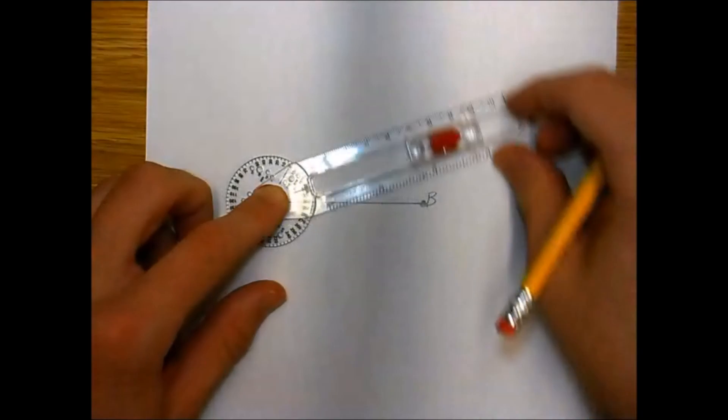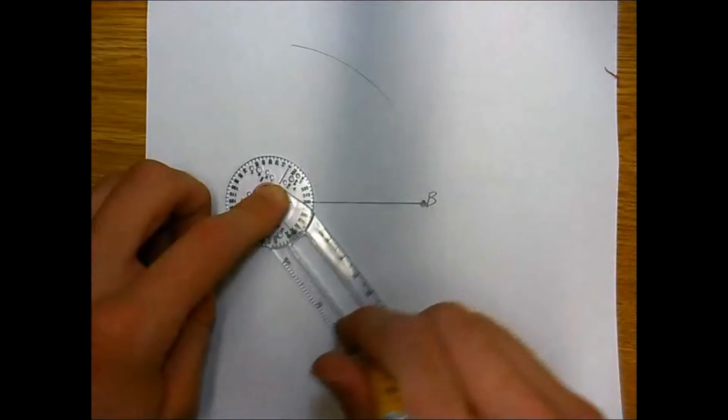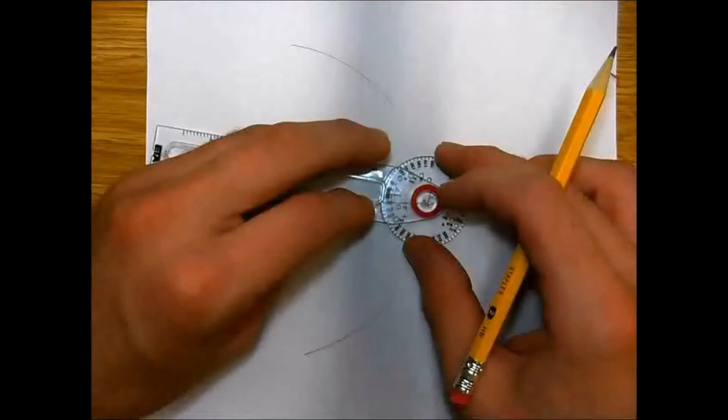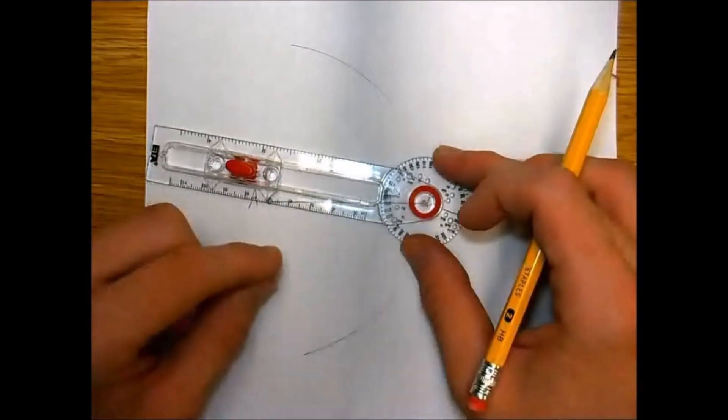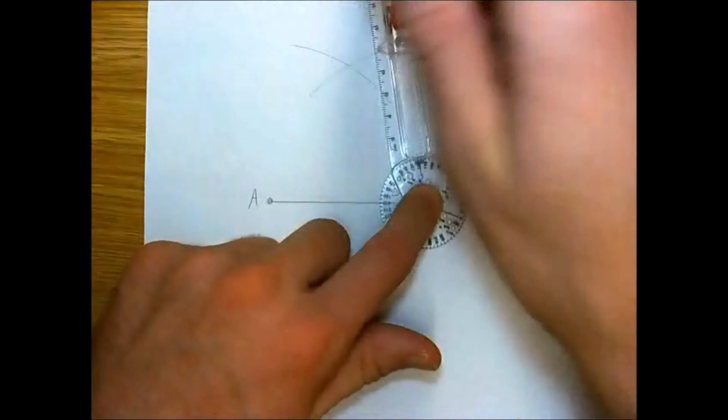So we fix it at A and we're going to swing an arc above the line segment and swing an arc below the line segment. We're going to repeat this process by setting the compass on point B. So we swing an arc above and swing an arc below.